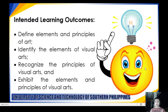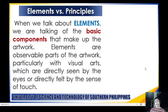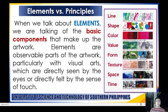Let's start with the principal topic: elements versus principles. When we talk about elements, we are talking about the basic components that make up the artwork. Elements are the observable parts of the artwork—particularly in visual arts—which are directly seen by the eyes or directly felt by the sense of touch. The basic elements are: line, shape, color, value, form, texture, space, and time.